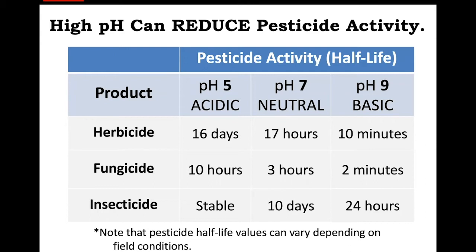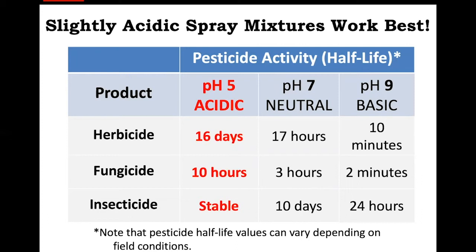This table shows general differences in the half-life of herbicides, fungicides, and insecticides as the pH level of a prepared pesticide mixture changes. Notice how the time these mixtures remain active decreases as the pH becomes more basic. In general, we observe that pesticide products are most active under acidic spray water conditions. However, we should not make these general assumptions for all herbicides, fungicides, and insecticides. We need to always check the label for the optimal pH range for each specific pesticide, especially when tank mixing multiple products.